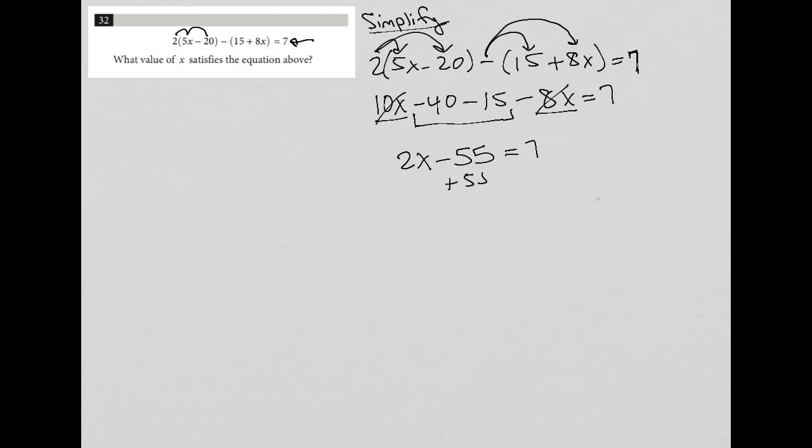And then, of course, I can add 55 to both sides here. So 55 is gone. I have just 2x on the left. 55 plus 7 is equal to 62. And divide both sides by 2 here. And I'm left with x is equal to 31. So there is my final answer.